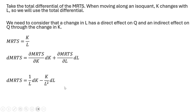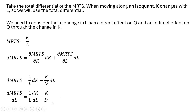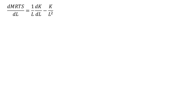Next, I'm going to divide everything through by DL. So now we get the derivative of the marginal rate of technical substitution with respect to labor, giving us this result here — that's just our last result after dividing through by DL.